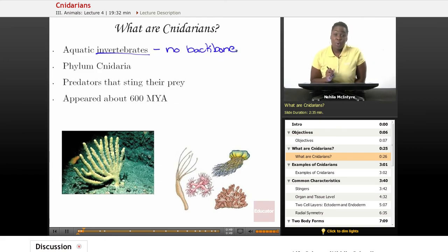Invertebrates evolved before vertebrates, the animals that do have backbones. And Cnidarians belong to the phylum Cnidaria. Now, Cnidarians are a little more evolved than our simplest of animals, which are the sponges.